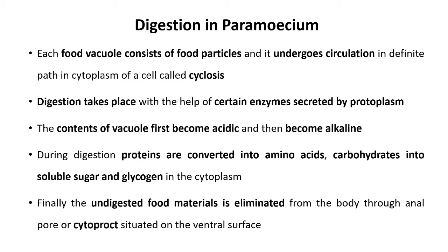Acidic food converts into alkaline form. During digestion, proteins are converted into amino acids and carbohydrates convert into soluble sugar and glycogen in the cytoplasm. Amino acids, soluble sugar, and glycogen are the simple forms of food, while proteins and carbohydrates are the complex food taken in by Paramecium. Finally, undigested food materials are eliminated from the body through the anal pore called the cytoproct, which is situated on the ventral surface of the pellicle. This is how digestion in Paramecium takes place.